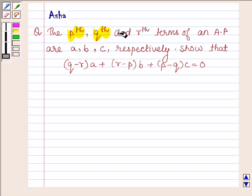the pth, qth and rth terms of an AP are a, b and c respectively. Show that (q-r)a + (r-p)b + (p-q)c is equal to 0.